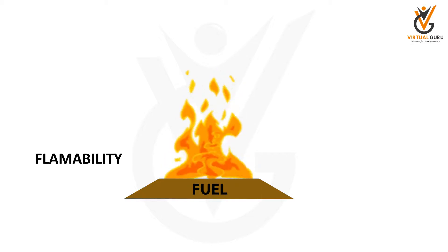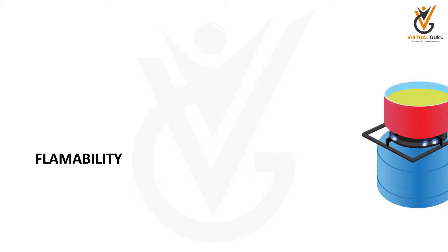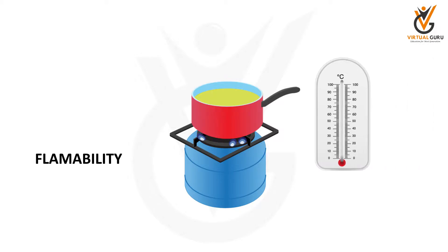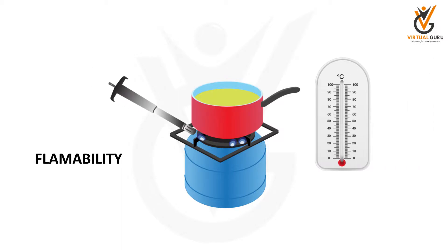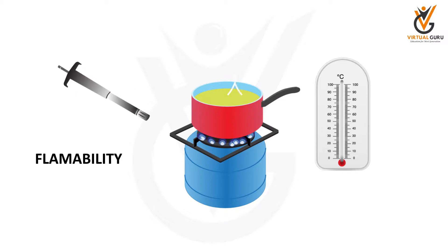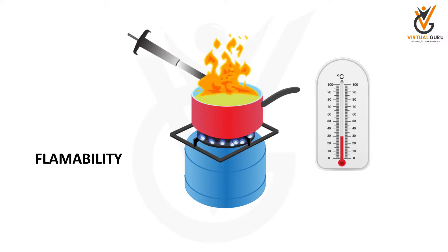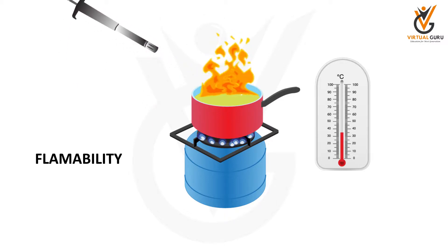For example, on a stove you put a pan with oil in it. As it is heating, it comes to a state of combustible level where a spark, or by its own ignition, it can catch fire. This is called flammability.